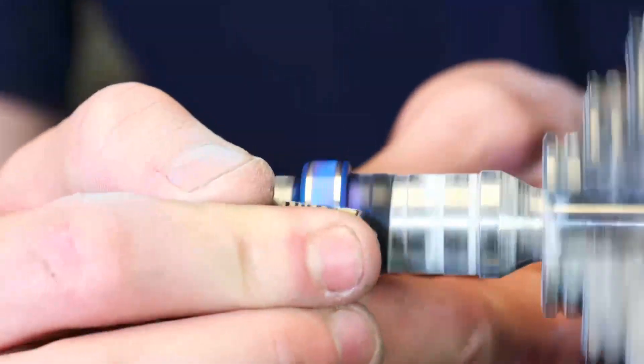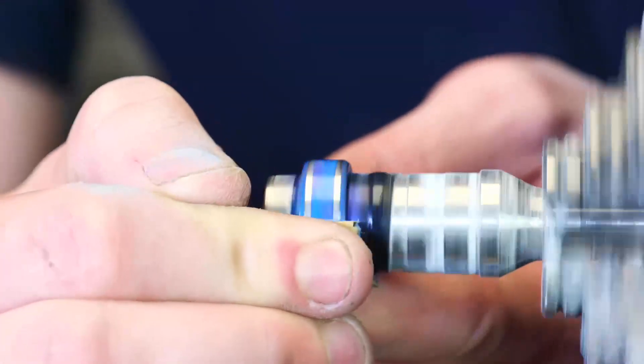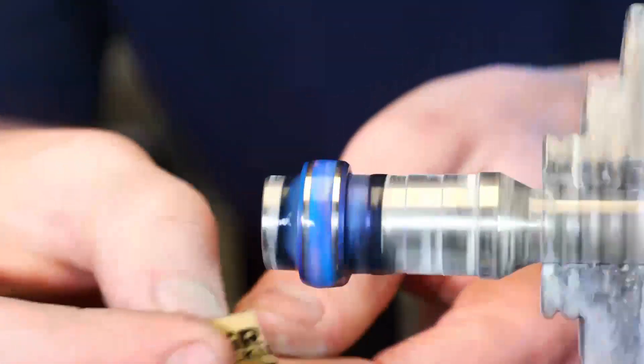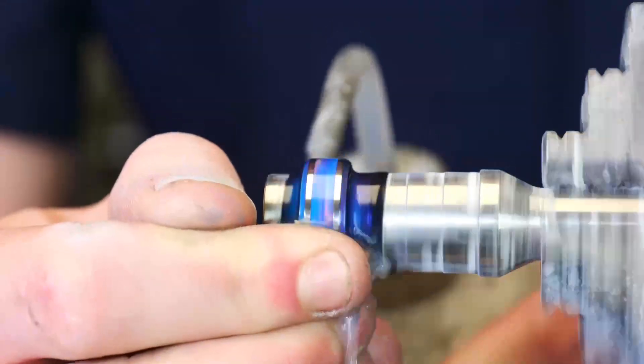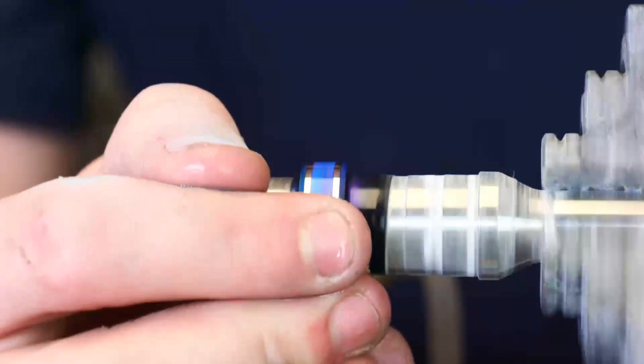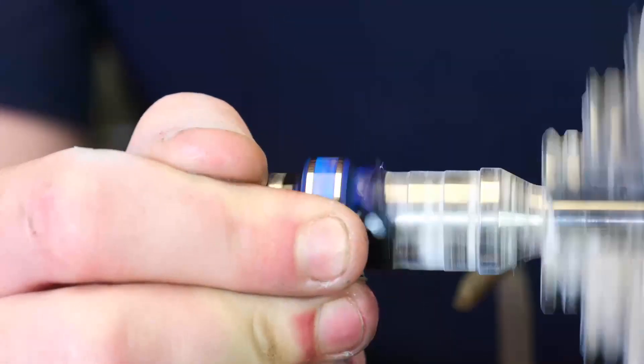After we've Dremeled everything flush, I'll take a little bit of my 220 grit sandpaper and we're just going to wet sand the exterior of the ring, just to create a nice even surface, uncover any holes that we're hiding, and just ensure that we're happy with the look of the ring before we completely lock it into place and finish it.